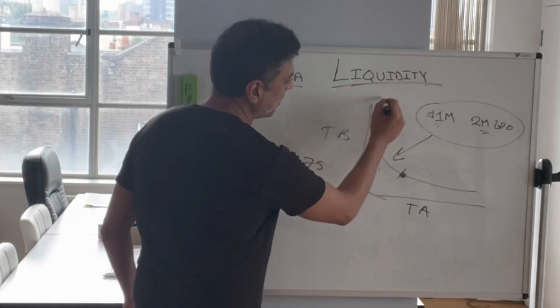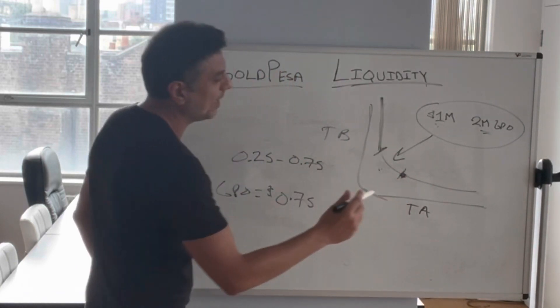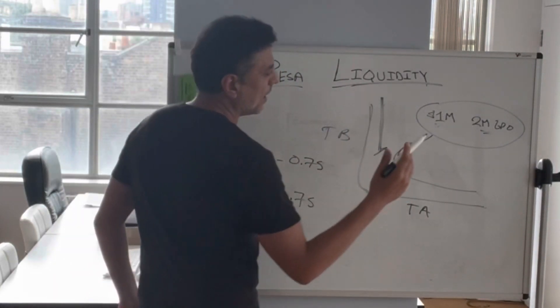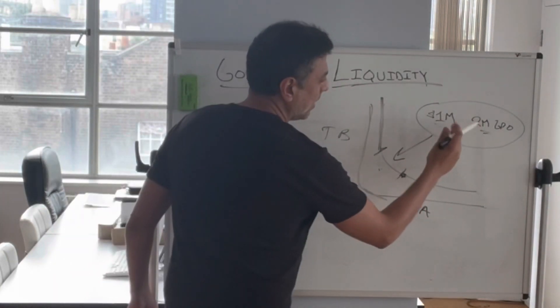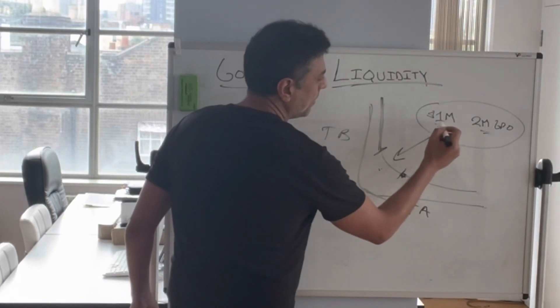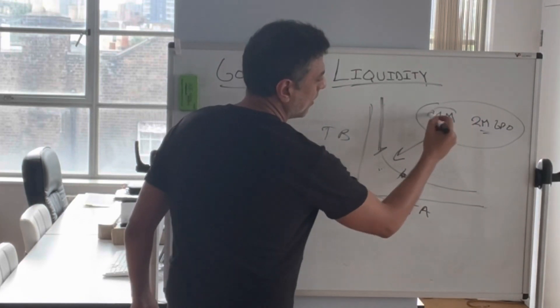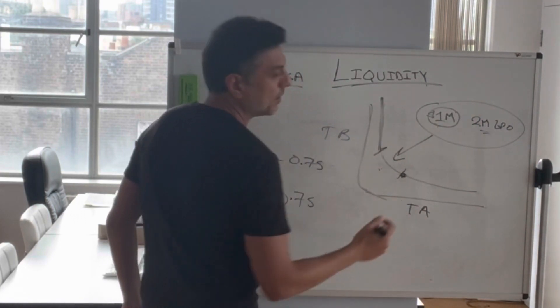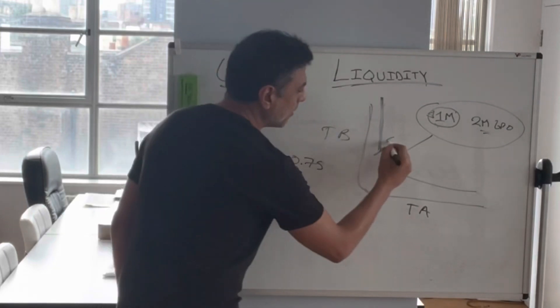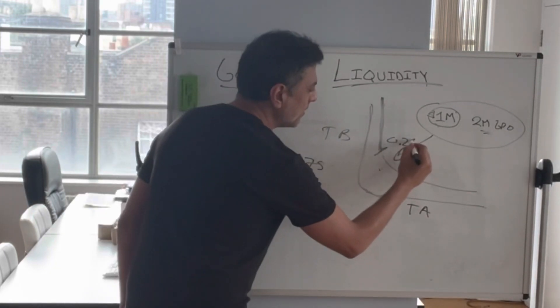So naturally we don't want this to happen. And the same goes for the other side — if we end up selling enough GPOs for 1 million dollars, we're going to hit a price of 25 cents.